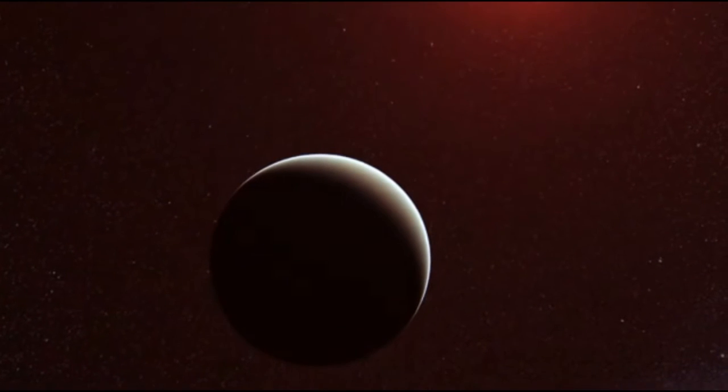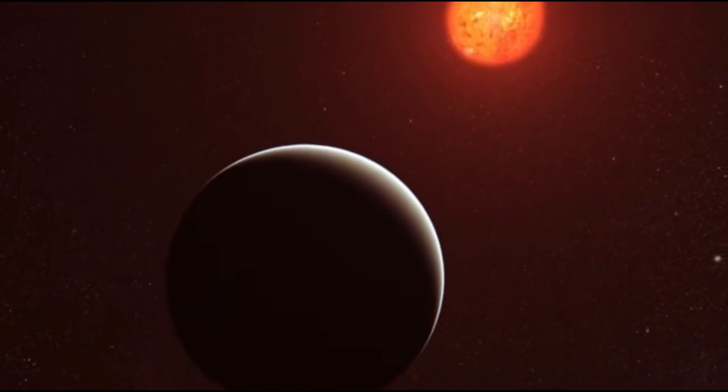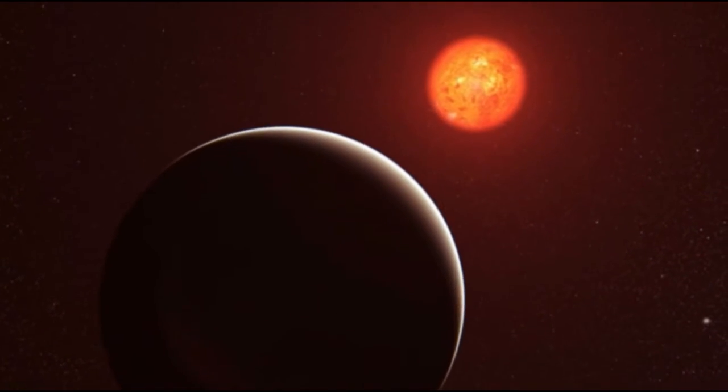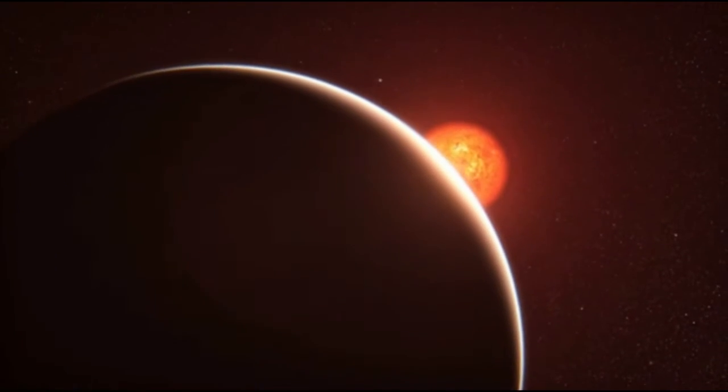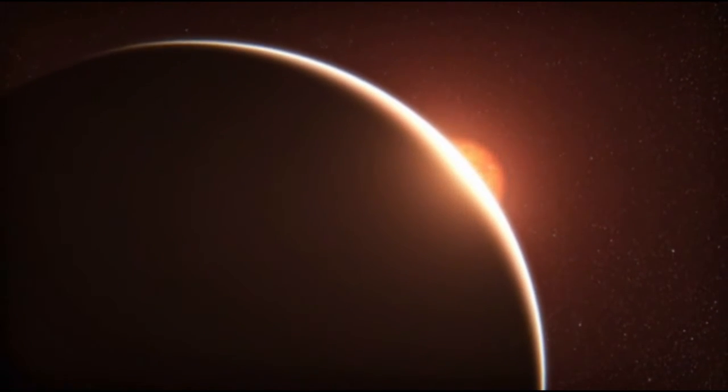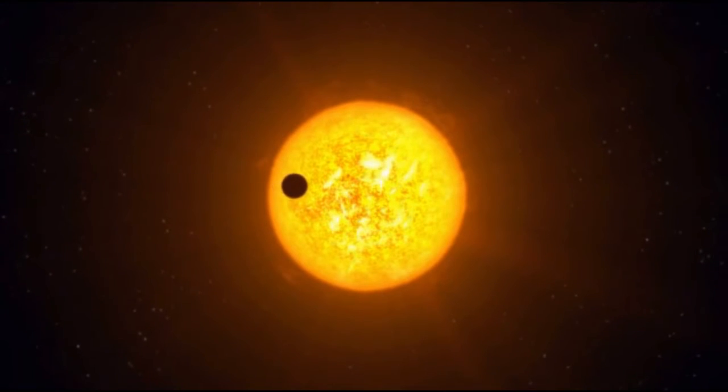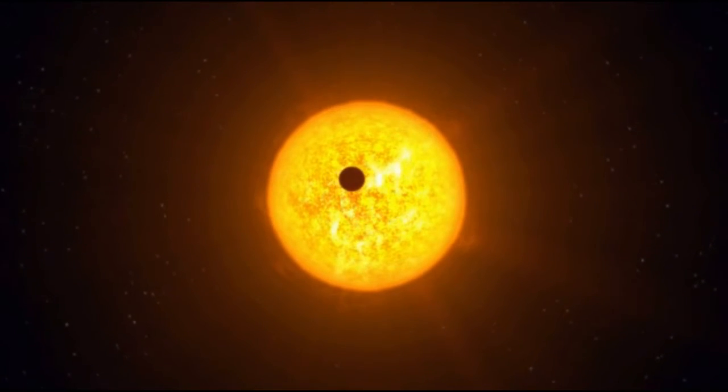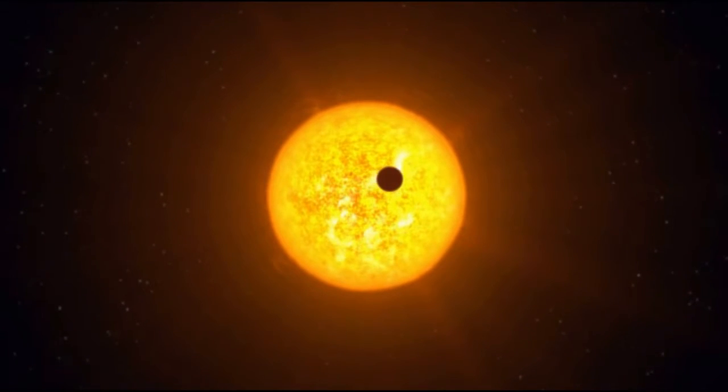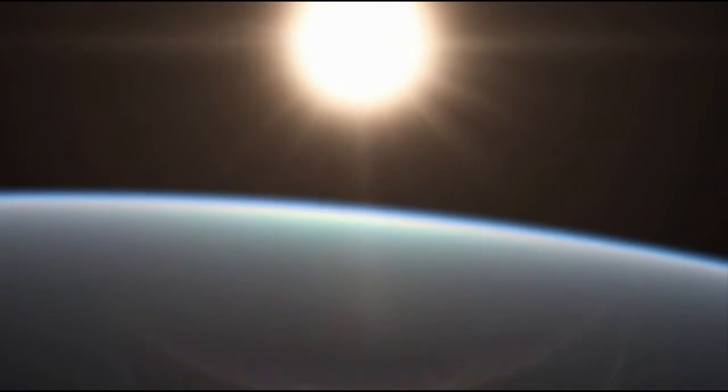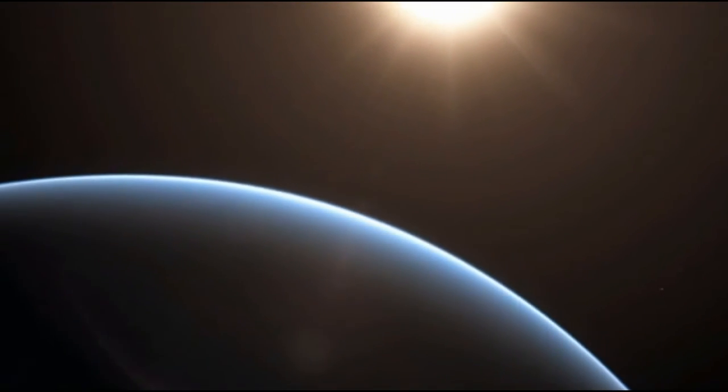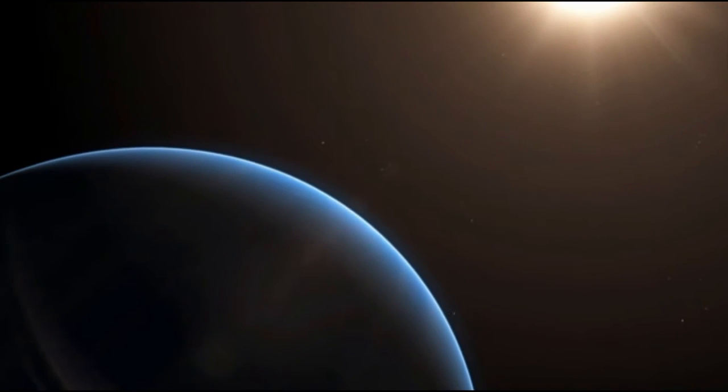The atmosphere around a super-Earth exoplanet was analyzed for the first time using the VLT. The planet, which is known as GJ 1214b, was studied as it passed in front of its parent star, and some of the starlight filtered through the planet's atmosphere. The atmosphere was found to be either mostly water in the form of steam, or dominated by thick clouds or haze.